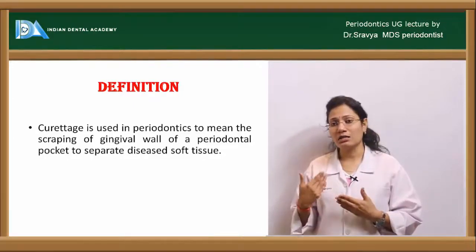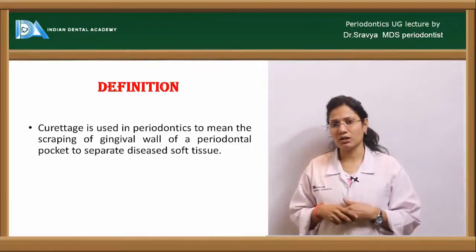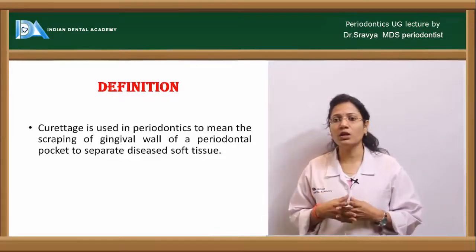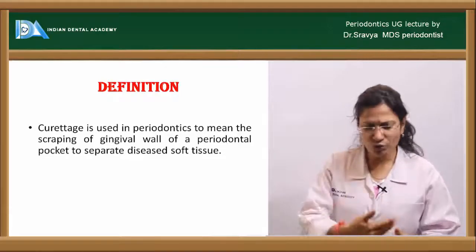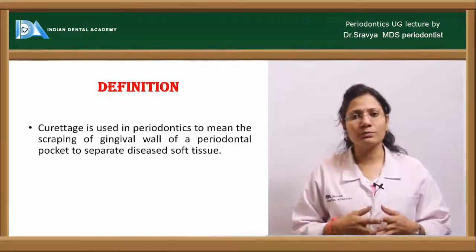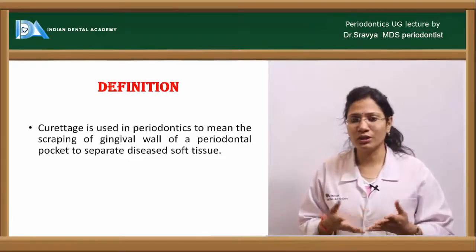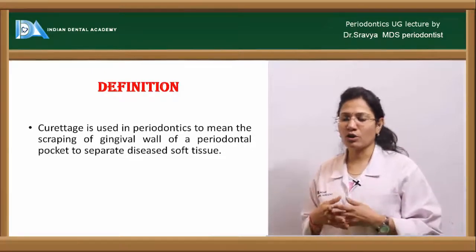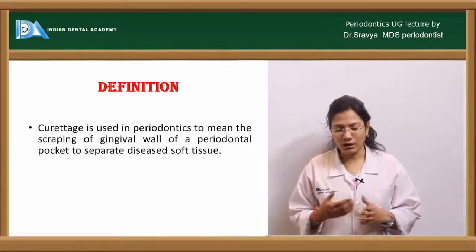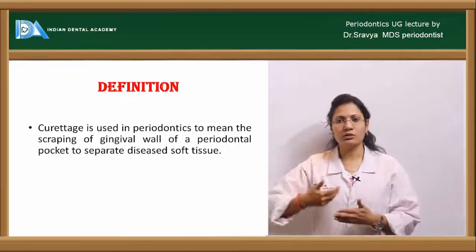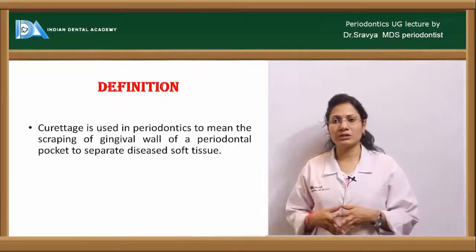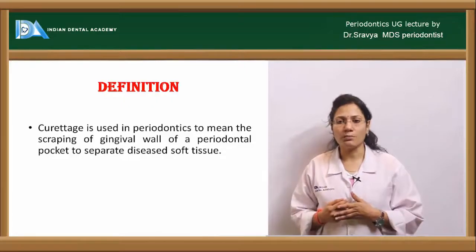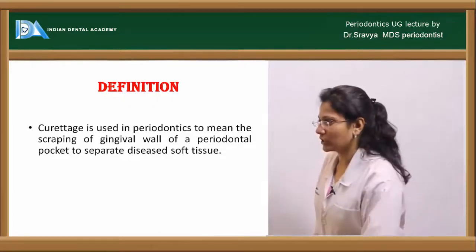This ulceration starts healing from granulation tissue, but it is infected granulation tissue that must be eliminated. Curettage is one of the procedures used to remove it — a treatment protocol to reduce periodontal pockets, using specialized instruments like curettes to remove the soft tissue wall of the pocket.